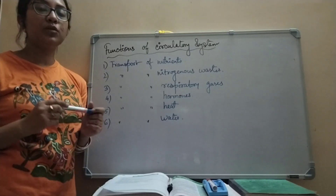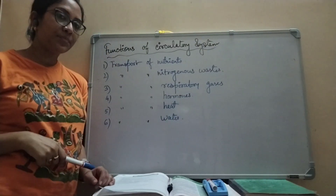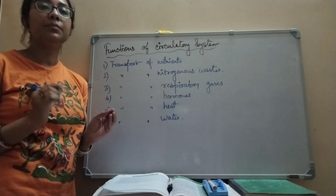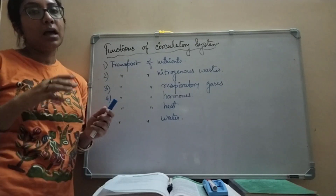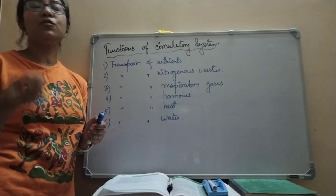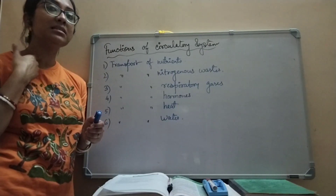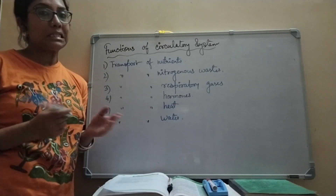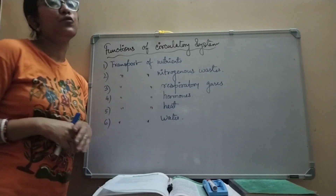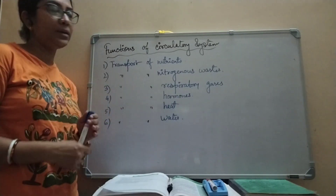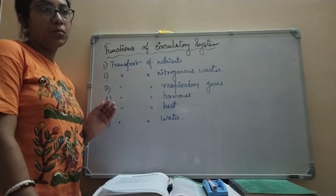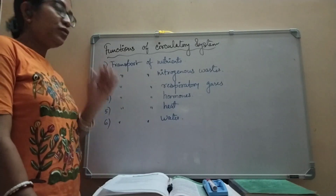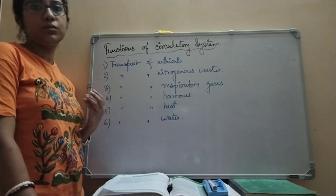TRH, the thyrotropin-releasing hormone, is secreted from the hypothalamus and commands the anterior pituitary gland to release TSH — thyroid-stimulating hormone. TSH then commands the thyroid gland in our neck region to release T3 and T4. Blood is the only medium by which hormones are transported throughout the body, so circulation comes into action here as well.